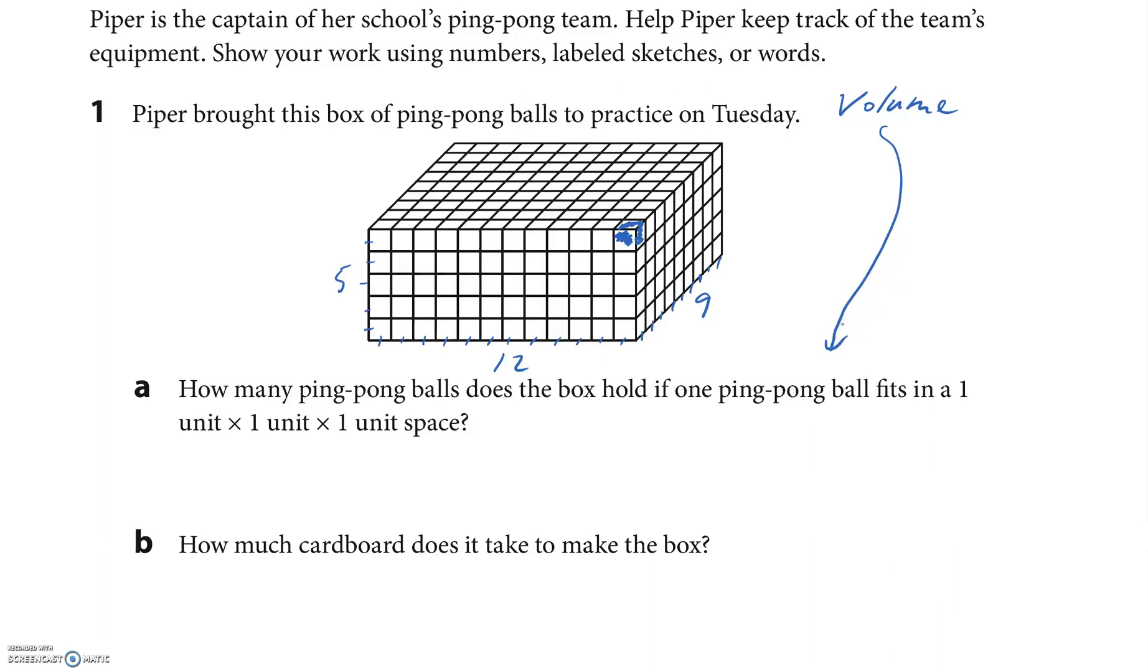For part a, they want to know the volume. When you're finding the volume, length times width times height, it doesn't actually matter the order. I'm gonna go 5 times 12 times 9. I actually see something that happened pretty nice for me. I'm gonna multiply 5 times 12 first and I know that's 60, and then I'm gonna multiply by that by 9. I know 6 times 9 is 54, and I reattach that 0, and so that's 540 ping-pong balls.